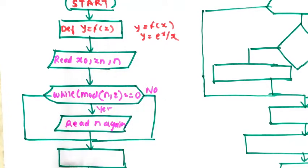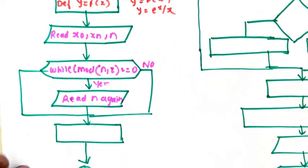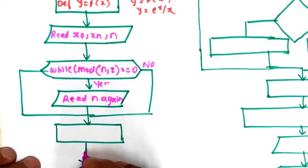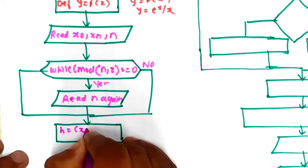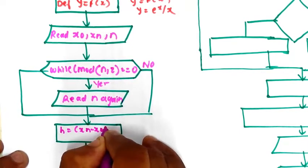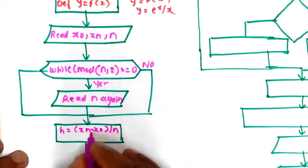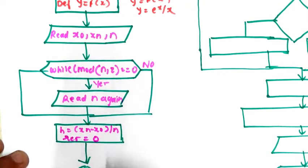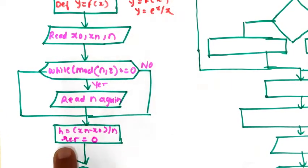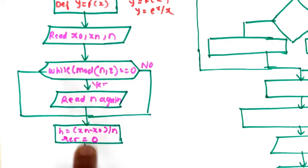If n is a multiple of 2, you go to the next step and find the value of h. You calculate the step size: h is equal to xn minus x0 divided by n. I also initialize the result — RES — equal to 0.